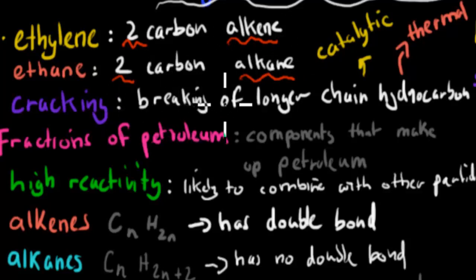Cracking is the breaking of longer-chain hydrocarbons into smaller hydrocarbons, for example breaking decane into ethane. We can do that through catalytic cracking or thermal cracking. Catalytic cracking means we use some sort of metal or enzyme to make that happen. Thermal is temperature, so we use temperature to crack. Those are two different types.